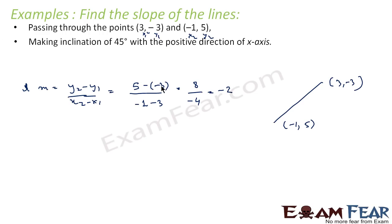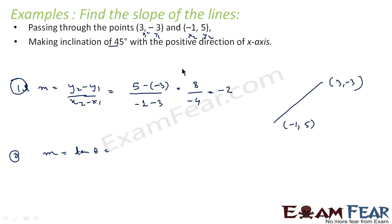Case 2: The line makes an inclination of 45° with the positive direction of the x-axis. Find the slope. Here we use m = tan θ, where θ = 45°. So m = tan 45° = 1. Very simple — we know the formula m = tan θ, we put θ = 45°, and we get m = 1.